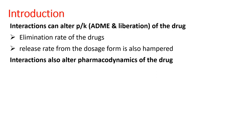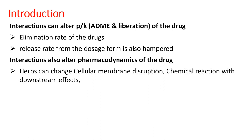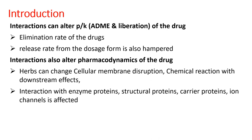There are other interactions which can affect the pharmacodynamics of drugs, such as cellular membrane disruption, direct chemical reaction in the blood with certain synthetic or herbal drugs, and lowering the effectiveness of certain synthetic drugs. Also, herbal drugs may alter enzyme proteins or structural proteins of plasma, carrier proteins, and ion channels — thereby increasing or decreasing the absorption of the synthetic drug.